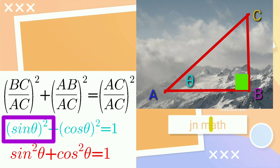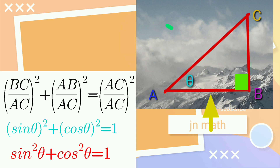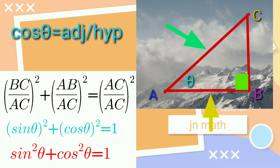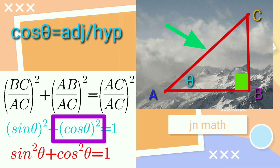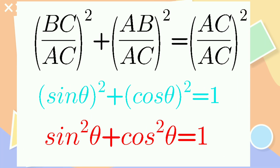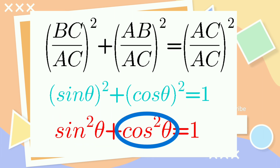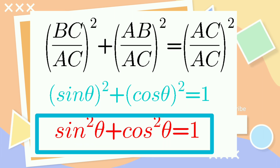What about AB by AC? AB is the adjacent side to theta, and AC is the hypotenuse. So, adjacent by hypotenuse gives us cos theta whole squared, which is equals to 1. Sin theta whole squared is nothing but sin squared theta, plus cos theta whole squared is nothing but cos squared theta. We proved it — how easy is this!